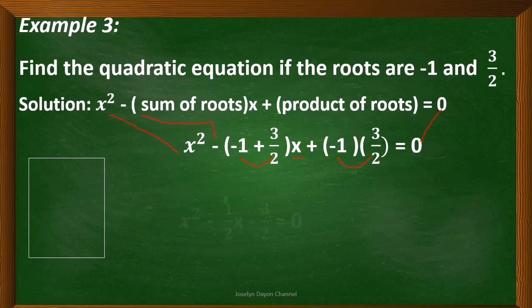Let's simplify. Copy x squared, copy the minus sign. Negative 1 plus 3 halves equals 1 half, so we have 1 half x. Then negative 1 times 3 halves: multiply the numerators to get negative 3, and just copy the denominator. So we have negative 3 halves equals 0.